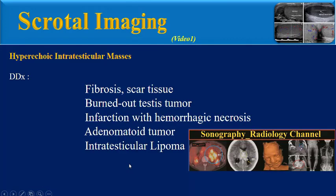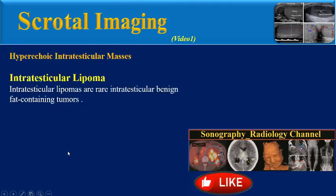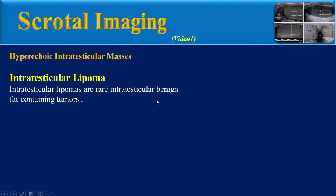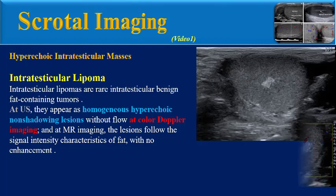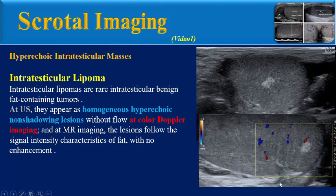The last entity is intratesticular lipoma. Intratesticular lipomas are rare intratesticular benign fat-containing tumors. At ultrasound, they appear as homogeneous hyperechoic non-shadowing lesions without any flow on color Doppler ultrasound. At MR imaging, the lesions follow the signal intensity characteristics of fat with no enhancement.